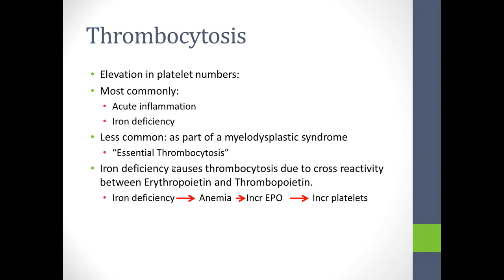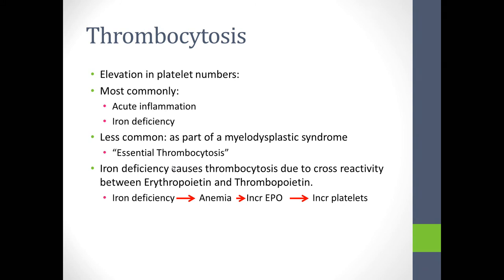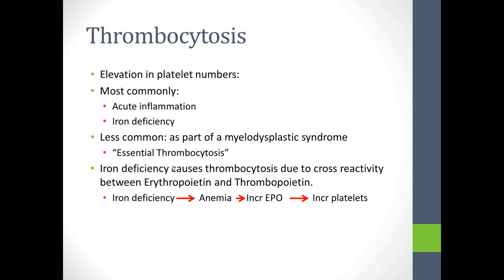Thrombocytosis is an elevation of platelet numbers. In children and most healthy adults, the most common causes are acute inflammation and iron deficiency. Iron deficiency causes thrombocytosis because of cross-reactivity between erythropoietin and thrombopoietin. Iron deficiency causes anemia, which causes decreased oxygen-carrying capacity, which causes increased erythropoietin production. That erythropoietin cross-reacts with thrombopoietin receptors and causes an unintended increase in platelet numbers.